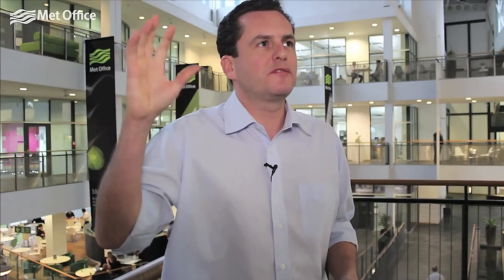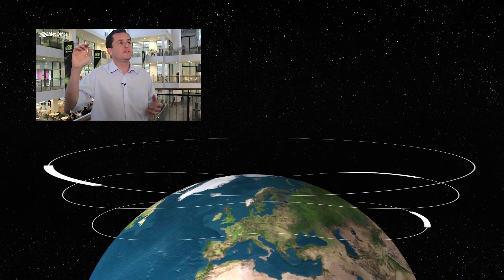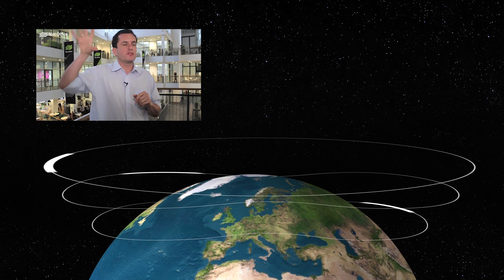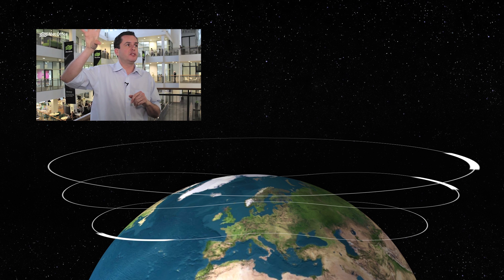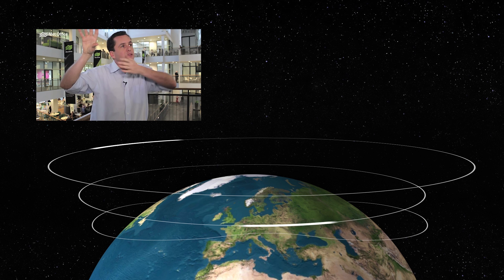Once you've got winds from the east at high altitude, then the next bunch of waves that come up from the lower atmosphere cannot propagate into that part of the atmosphere anymore. It turns out that waves can only propagate when the winds are from the west, so they see this easterly region at high altitude and now they break lower down than where they did originally, and again they push the air from the east.